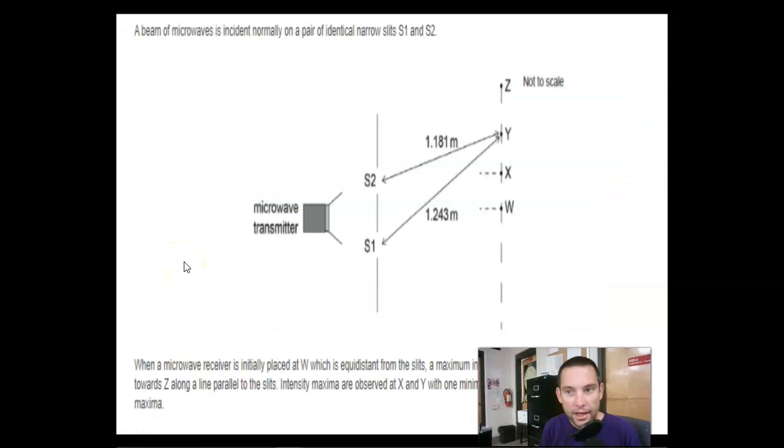And let's do one last one. So, we have a beam of microwaves incident on identical narrow slits, S1 and S2. When a microwave is placed at W, it is equidistant from the slits. A maximum in intensity occurs or is observed. The receiver is then moved towards Z along a parallel to the slits. Intensity maxima are observed at X and Y with one minimum between W, X, and Y consecutive maxima. So, what that tells us is these points are now bright fringes. Completely different from the last question. So, be aware that you can jump back and forth.